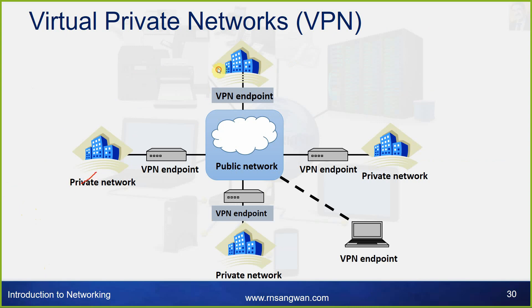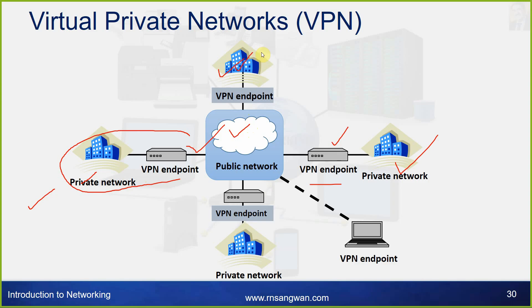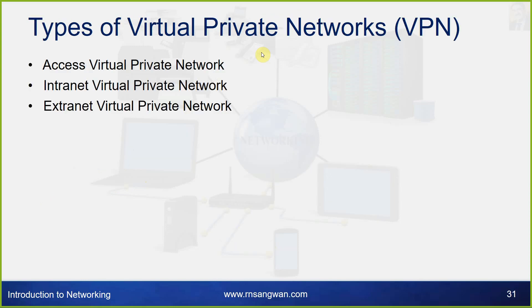VPN endpoints connect a private network over the public network such as the internet. For example, you use Oracle VPN to connect to the Oracle network via the internet — that is a virtual private network. There are three types of VPN: access virtual private network, intranet virtual private network, and extranet virtual private network.